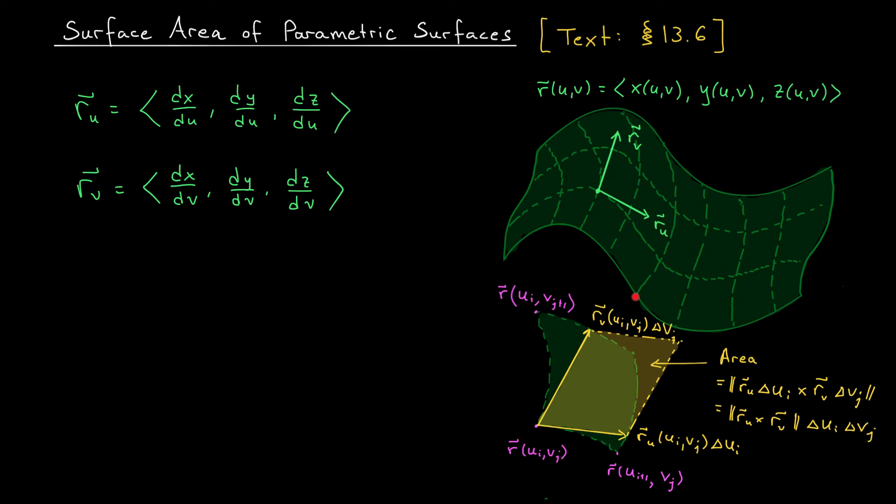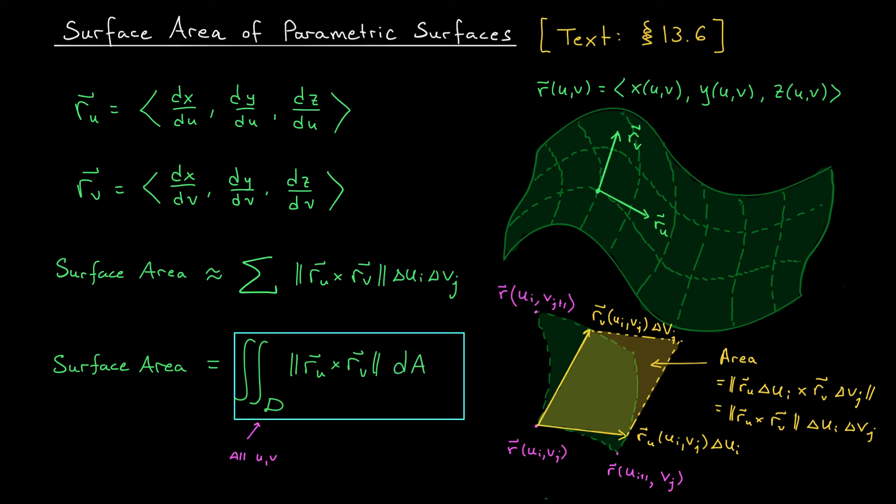To approximate the total surface area, we're going to add up those approximations. The surface area is approximately the sum over all patches of the norm of ru cross rv times delta ui delta vj. And I think you know the drill, right? At this point, we're going to let the number of patches go off to infinity. The patches are going to get smaller and smaller and smaller, and this sum is going to become an integral. Our actual surface area can be written as the double integral over all u and v. So I'm just going to say D for the domain of our parameters of the norm of ru cross rv, and then this du dv term we can write as dA. So we can find our surface area using a double integral.